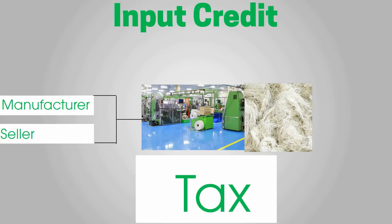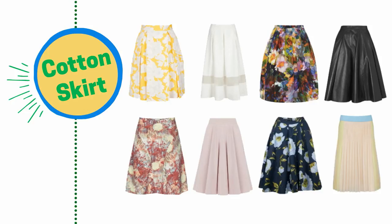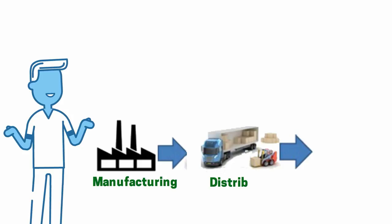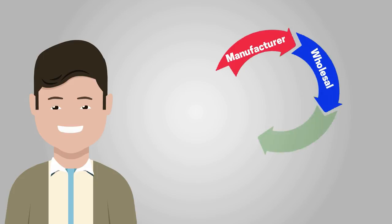Let's see a case study of manufacturing a cotton skirt. Tax is levied at each stage in the entire production process, right from manufacturing to distributing to final sales. We will cover four parties: manufacturer, wholesaler, retailer, and customer. For simplicity, we will take a standard tax rate of 12% across four stages of production.